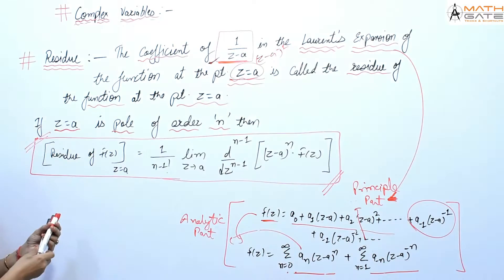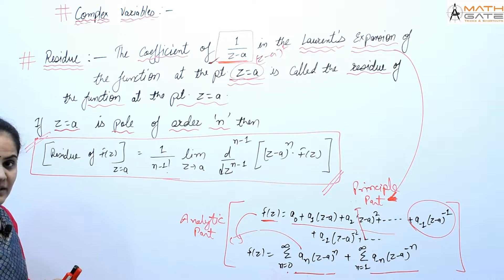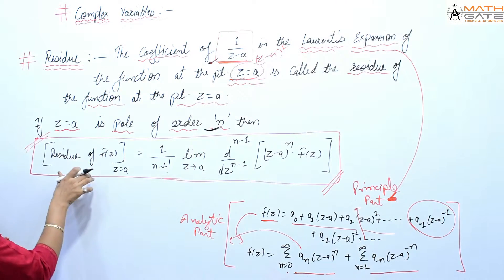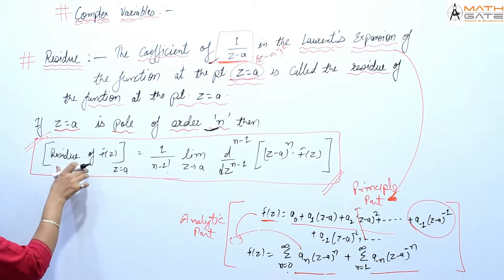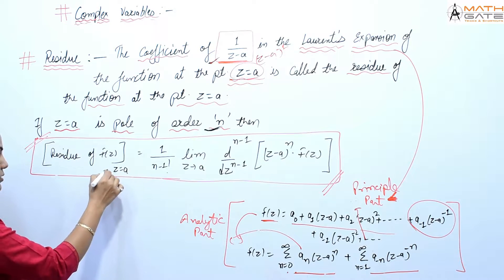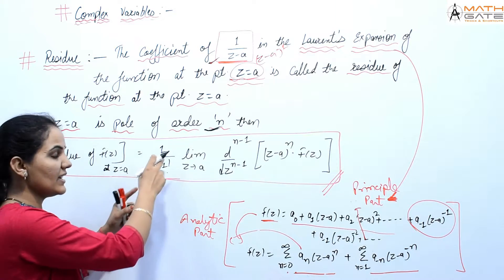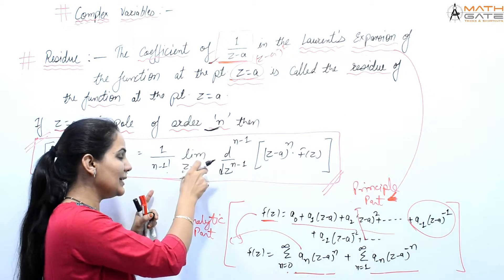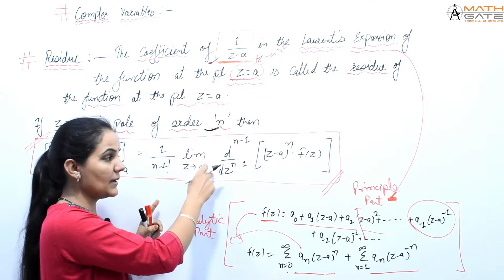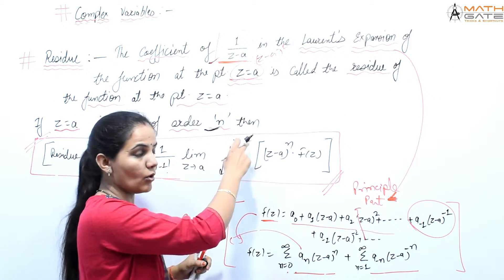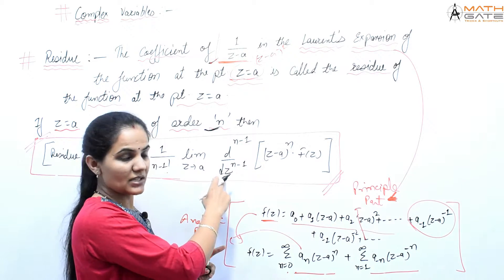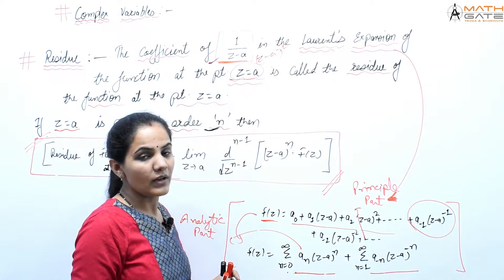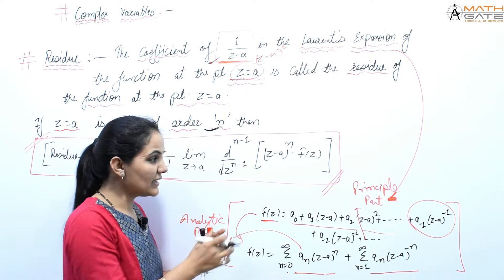If f(z) has a pole of order n at z = a, then the residue of f(z) at z = a equals (1/(n−1)!) × lim[z→a] d^(n−1)/dz^(n−1) [(z−a)ⁿ · f(z)].